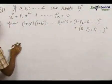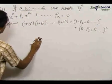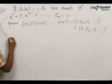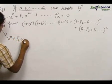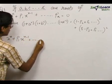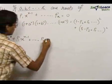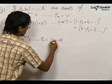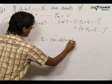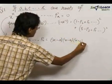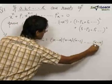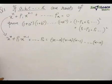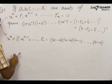Starting with the fact that a, b, c up to k are the roots of this equation, we can write it as x^n + p₁·x^(n-1) + ... + pₙ = 0, which equals (x−a)(x−b)(x−c)...(x−k), since a, b, c up to k are the roots of this polynomial.